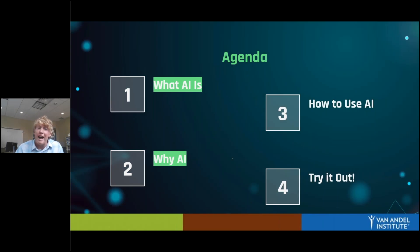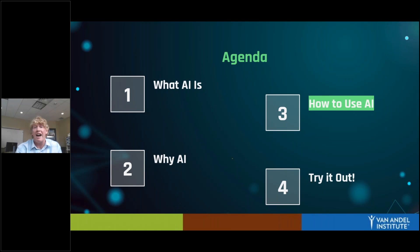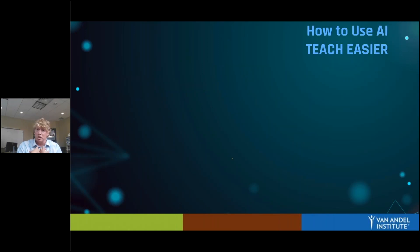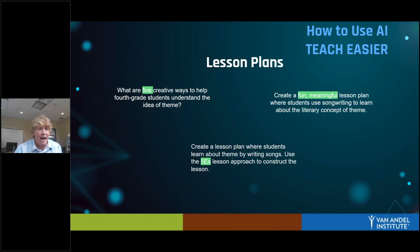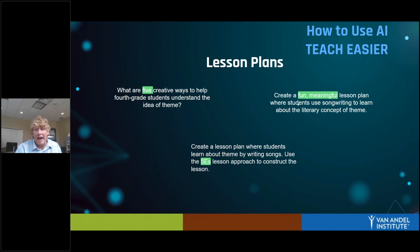Now we're going to spend most of our time on specific ways to use AI in the classroom. On the teacher side, to teach easier, one thing you can do with ChatGPT is have it create lesson plans for you. A couple of simple hacks: first, have it do multiple drafts — ask for five or twelve different ways to do something, and you get lots of ideas to choose from. Another great hack is to give it some adjectives — if you want your lesson to be fun and meaningful, including those adjectives will direct the machine in that direction.